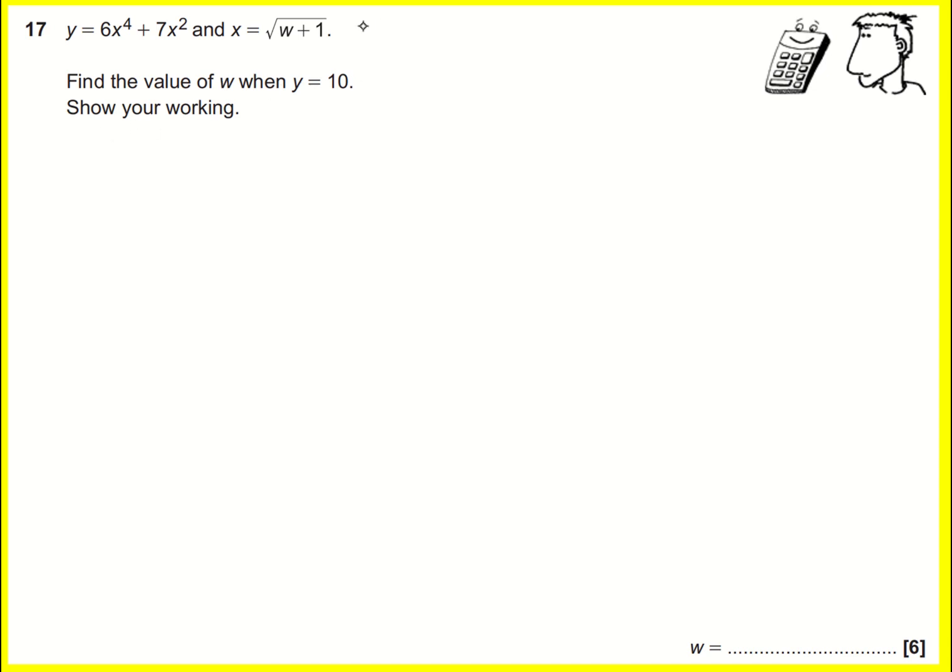So we're interested in the value of w when y is equal to 10. I think it makes sense, actually, as a first go, to work out, to substitute in for x, for x squared and x to the 4. So x squared is going to equal w plus 1, and x to the 4 then is going to equal the square of that, it's going to be w plus 1 squared. Suddenly I can write something down that has a bit more meaning, I think. 10 equals 6 times w plus 1 squared plus 7 times w plus 1.